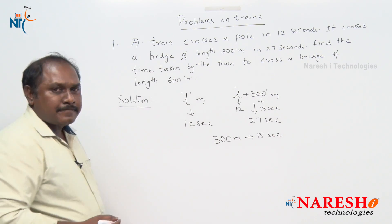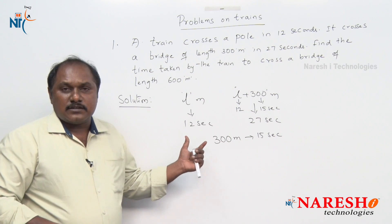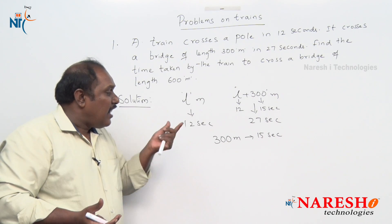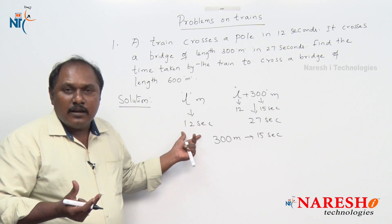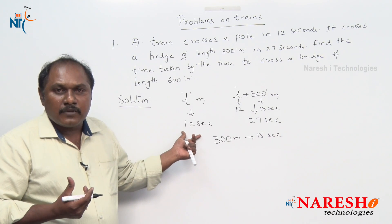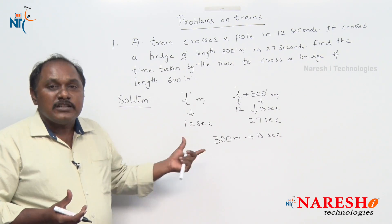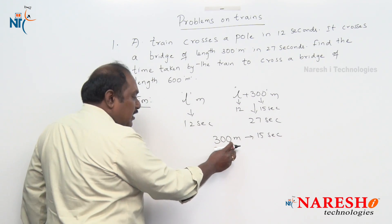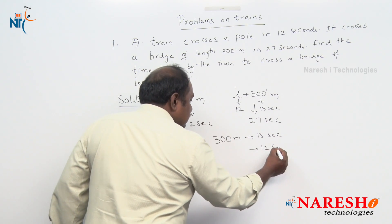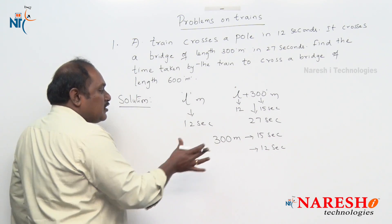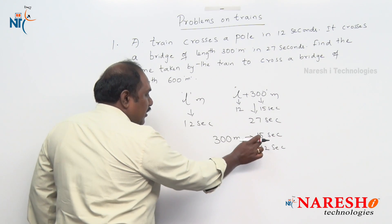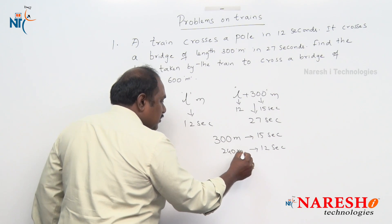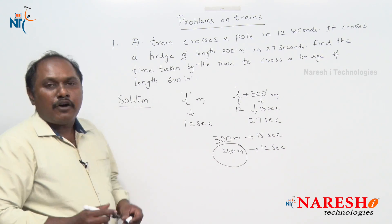What is the length of the train? In 12 seconds, it is crossing a pole, meaning it travels a distance equal to the length of the train. So whatever distance the train travels in 12 seconds is the length of the train. In 15 seconds, the train travels 300 meters. In 12 seconds, just cross-multiply: 15 × 20 = 300, so 12 × 20 = 240 meters. The length of the train is 240 meters.